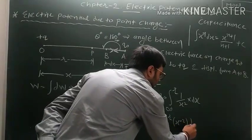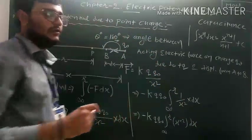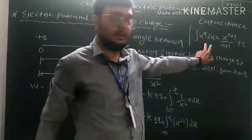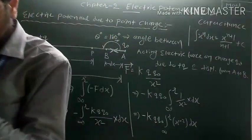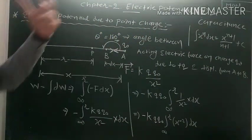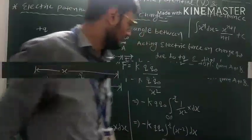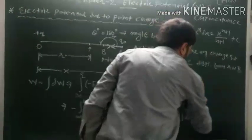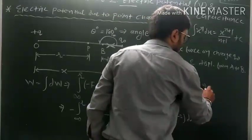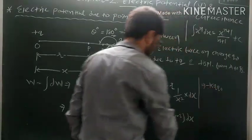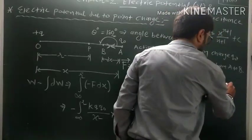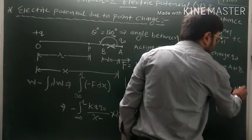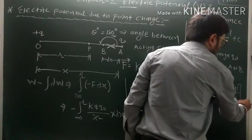We can write x raised to minus 2 dx. Integrating using the identity: integral of x^n dx equals x^(n+1) divided by (n+1) plus c. Applying this, we get x^(−2+1) divided by (−2+1), evaluated from infinity to R, which gives x^(−1) divided by −1. The two negatives cancel to give a positive result.